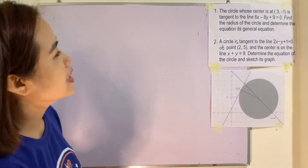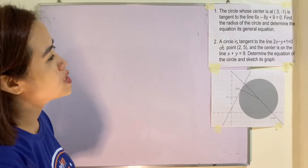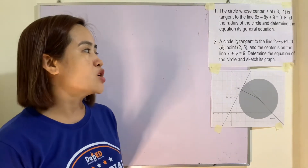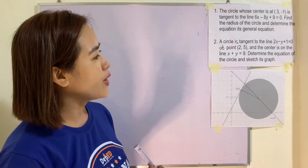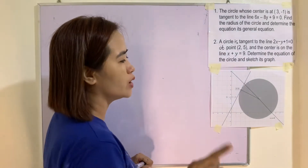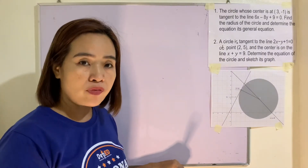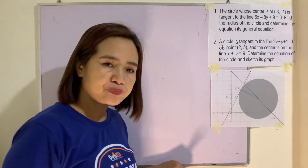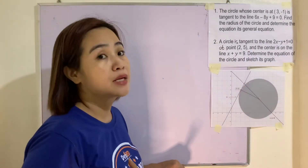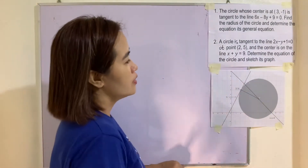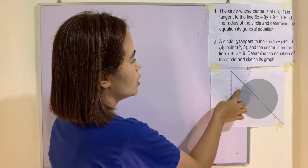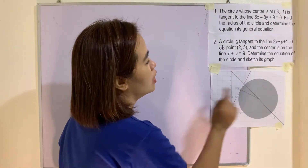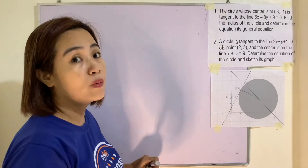Example 2: A circle is tangent to the line 2x minus y plus 1 equals 0 at the point (2, 5), and the center is on the line x plus y equals 9. Determine the equation of the circle and sketch its graph. The line x plus y equals 9 contains the center. The circle is tangent at the point (2, 5), meaning this tangent line forms a perpendicular segment going to the center, creating a right angle.